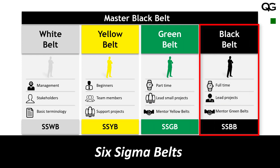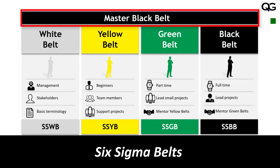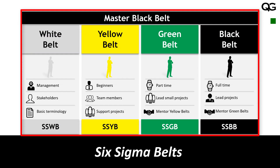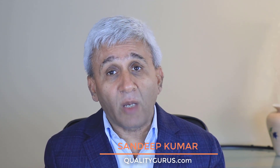Black belt is a full-time role — the only thing you do is lead complex Six Sigma improvement projects and mentor green belts so they can develop and potentially become black belts. Above that is Master Black Belt, a highly competent individual who trains black belts and other belt levels; typically one person holds this role in an organization. With this, we complete a brief introduction to Six Sigma — there is much more to learn, covered in separate courses and ASQ certification exams.